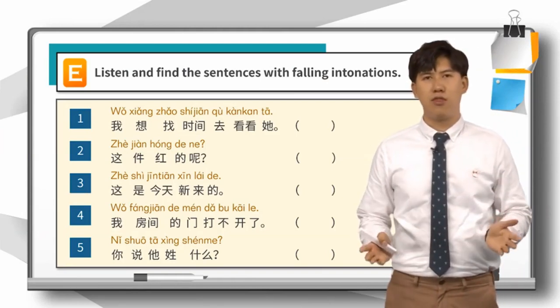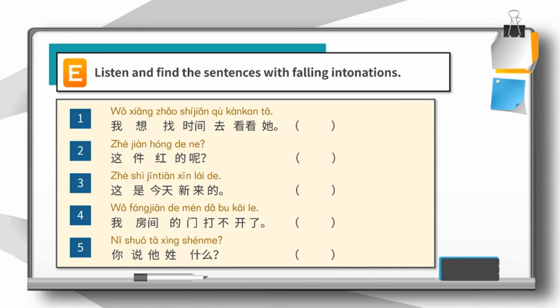Now listen and find the sentences with falling intonations. 1. 我想找时间去看看他. 2. 这件红的呢? 3. 这是今天新来的. 4. 我房间的门打不开了. 5. 你说他姓什么?